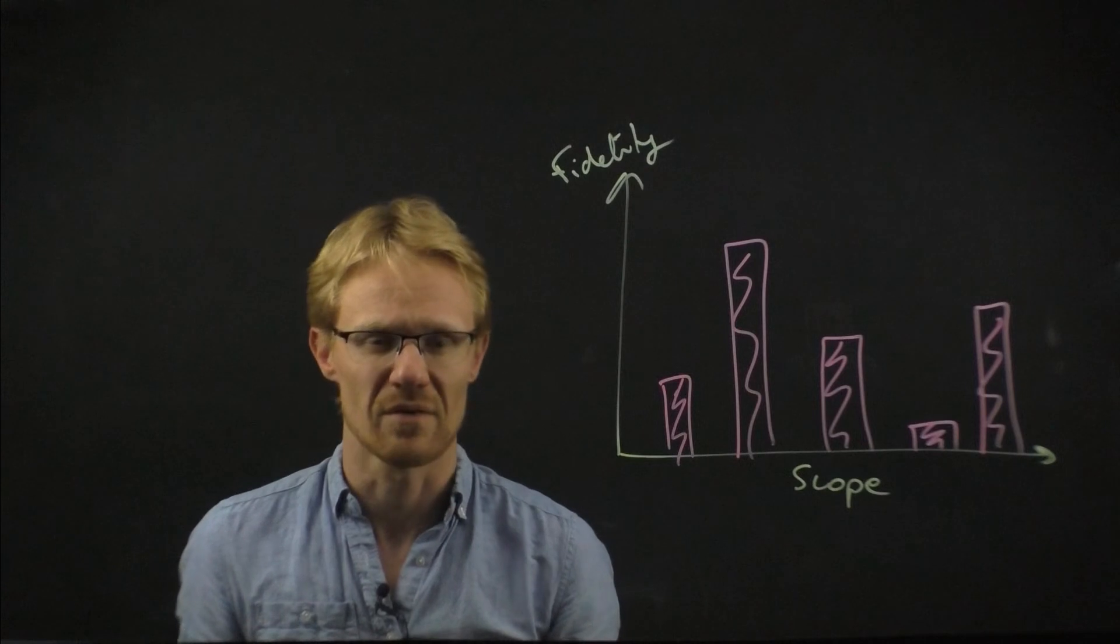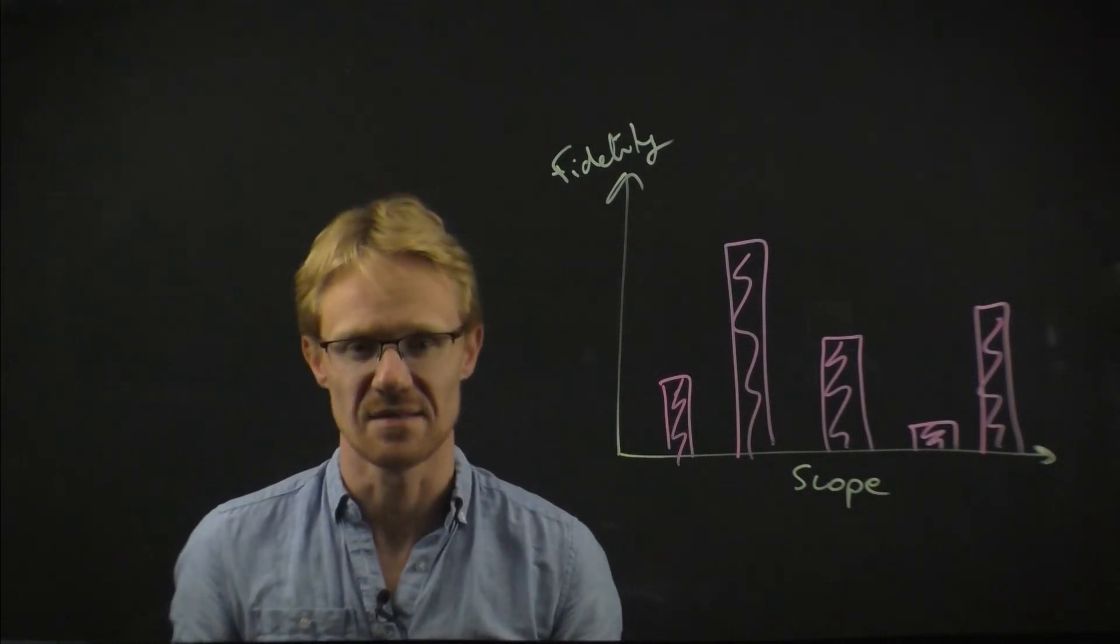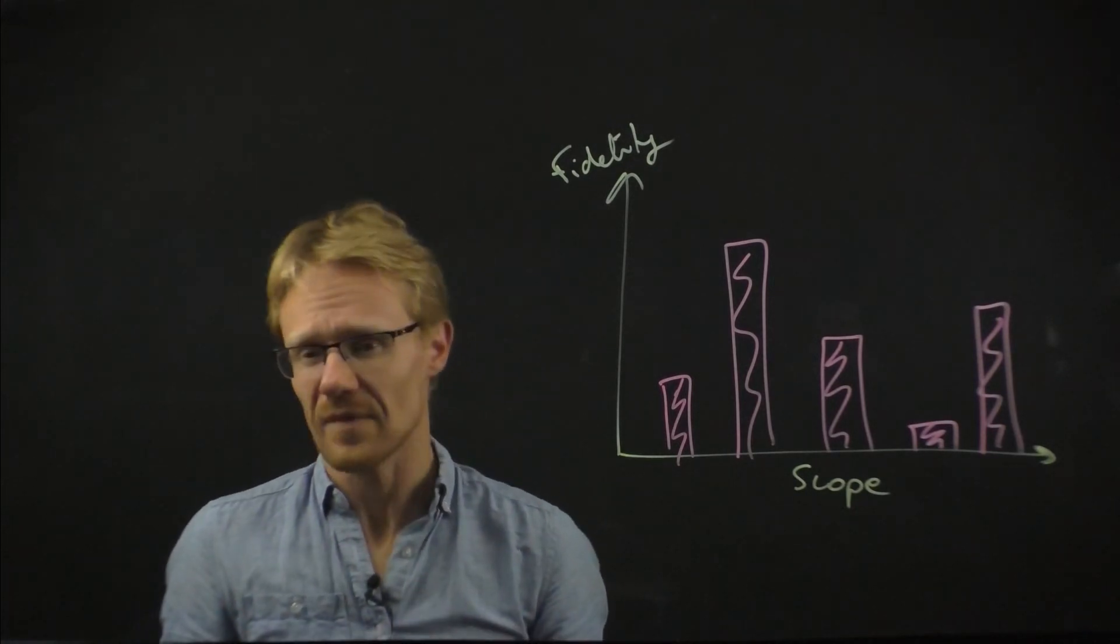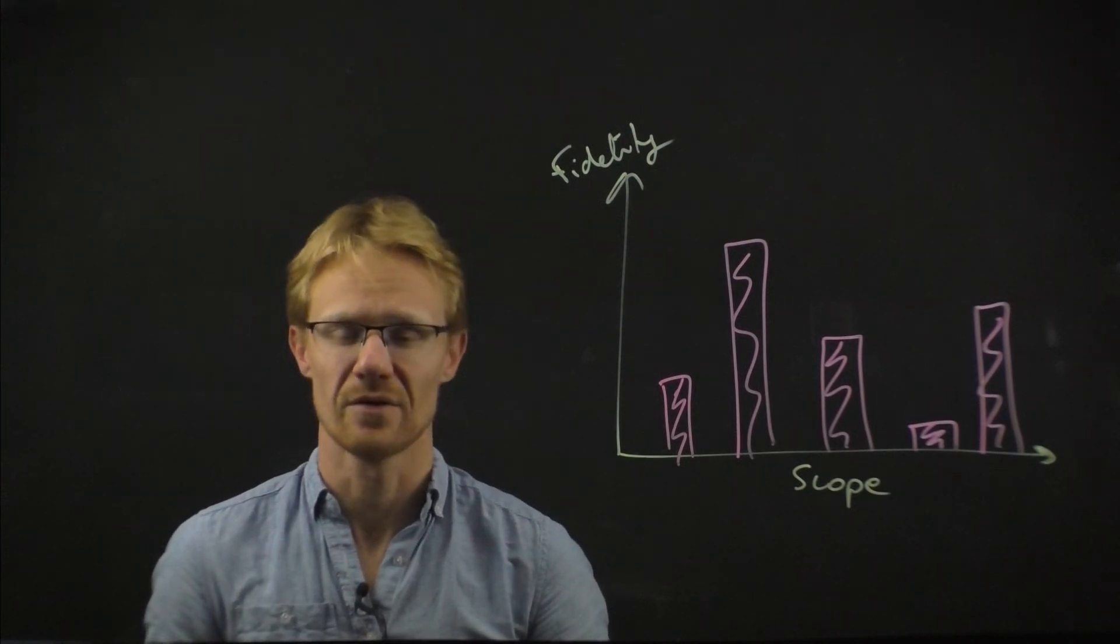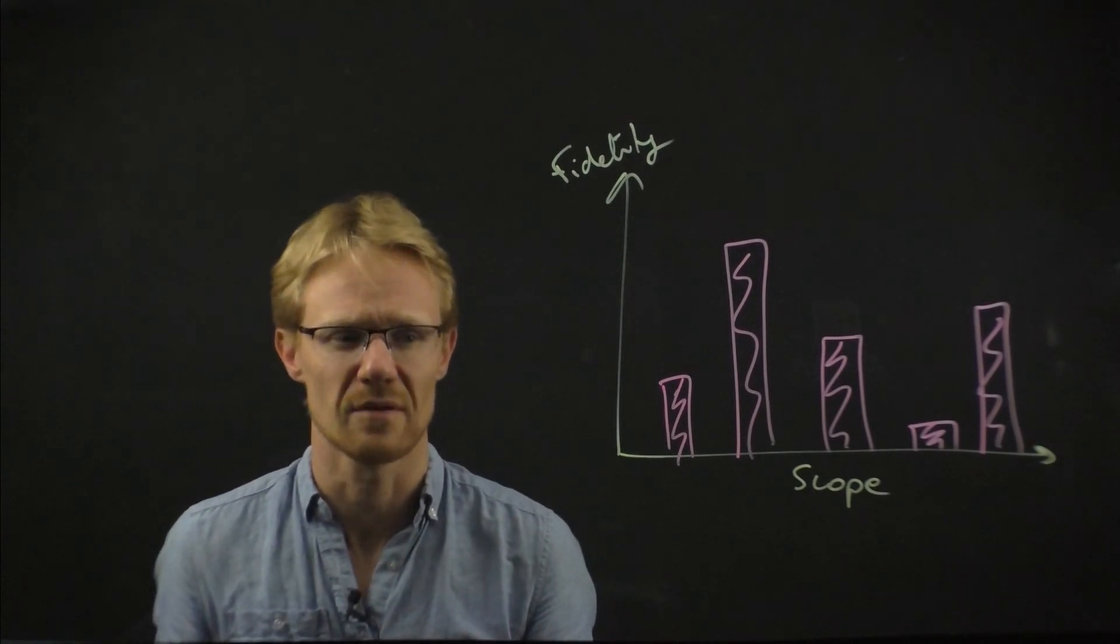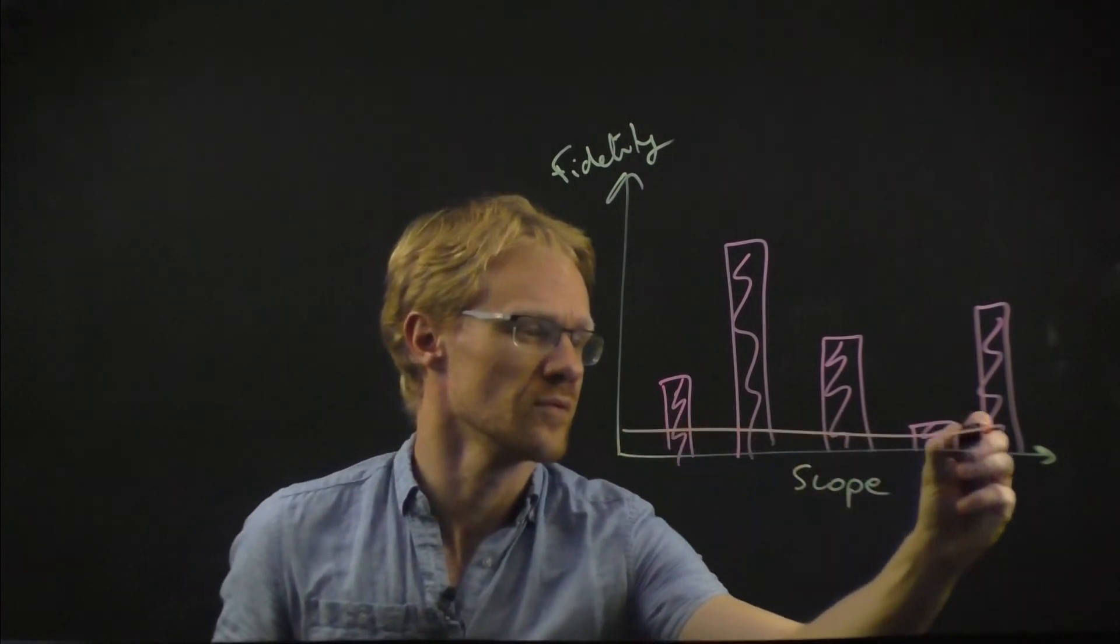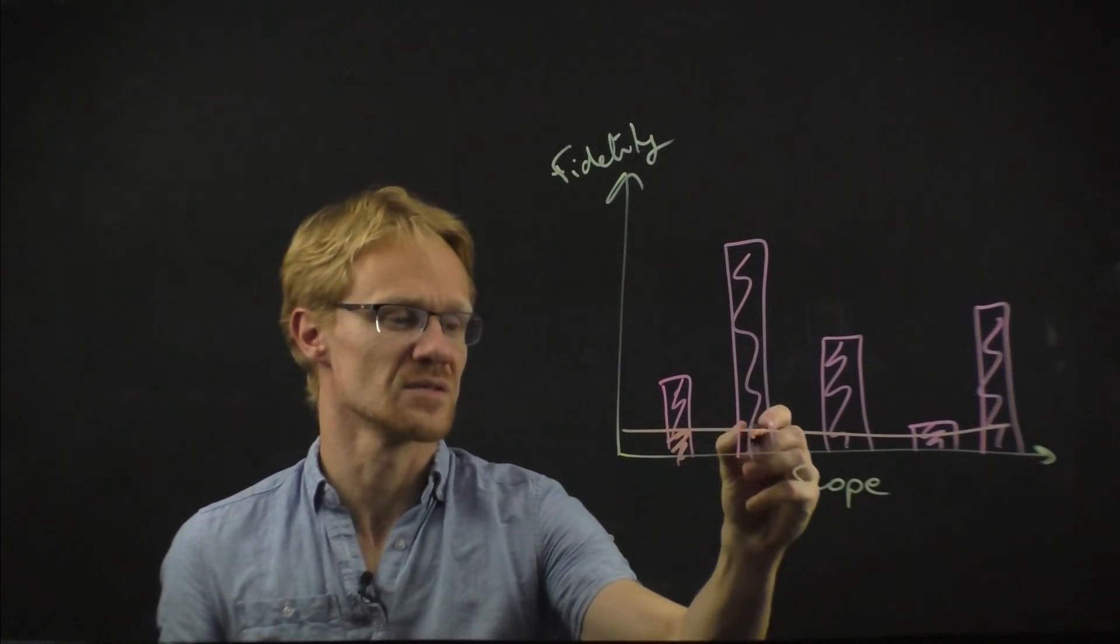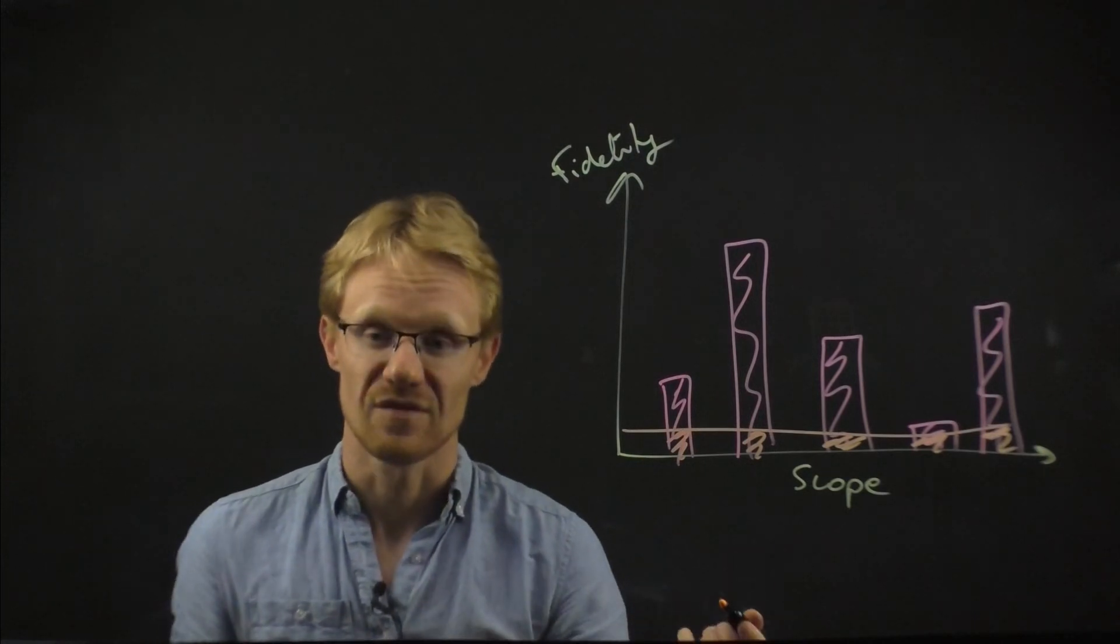Some things just need to be there because they just need to be there, but they don't need to be the most refined system ever. Some features, however, are the USP of your company, the killer feature that really needs to be refined. Now, with such a fidelity profile, you can also develop some strategy about how you're going to approach your product development here. What are you going to do on your first release? Well, maybe the first thing we do is at the lowest fidelity. So we build these features, all the features at the lowest fidelity possible.